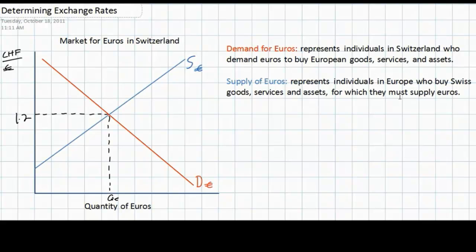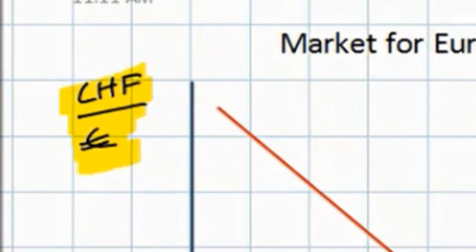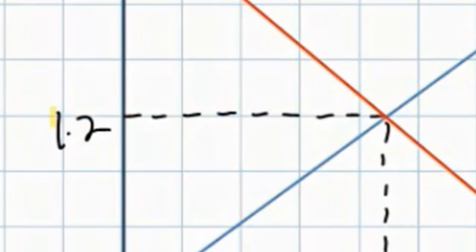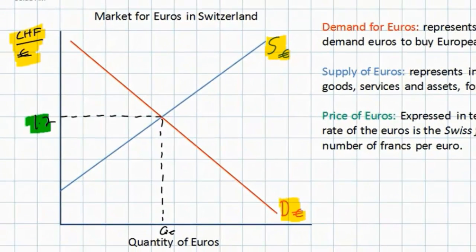Next, let's look at some of the labels on our foreign exchange diagram for euros in Switzerland. The price of the currency is known as the exchange rate. In this case, the price of euros is always expressed in terms of the number of Swiss francs per euro. Therefore, on our vertical axis we put CHF, which is the abbreviation for Swiss francs, over euros. We can see that 1 euro costs 1 franc and 20 cents to a Swiss household, giving an exchange rate of 1.2 francs per euro.